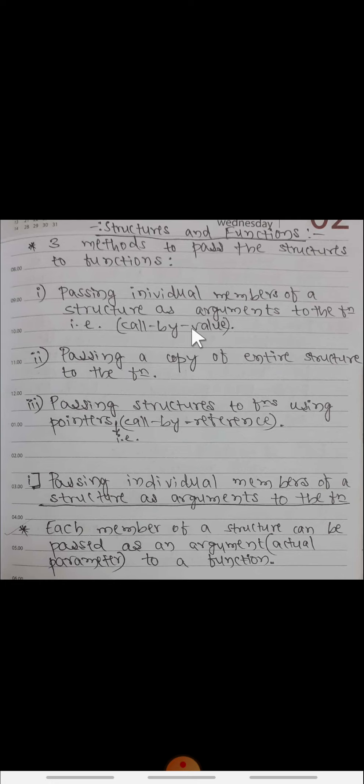The first method is very similar to call by value — here we are sending individual members of a structure as arguments to the function. The second method is we can pass a copy of the entire structure to the function at a time, instead of sending individual members. The third method is passing structures to functions using pointers, which is very similar to call by reference. Let us see these methods one by one.